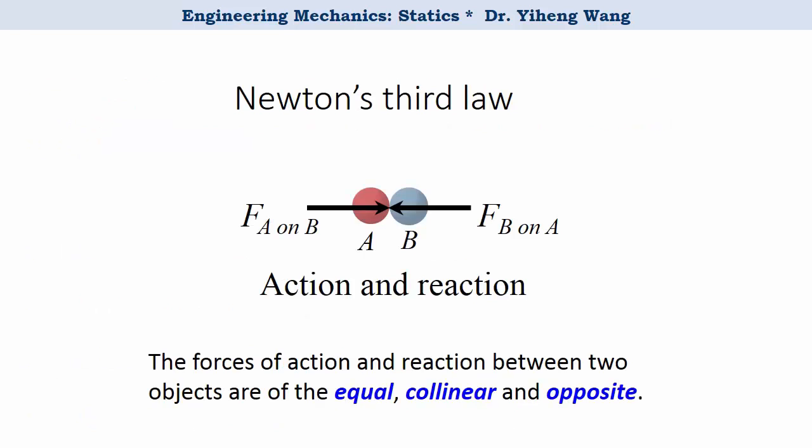Newton's third law is the law of action and reaction. Let's say object A exerts a force on object B. Inevitably and simultaneously, object B will also exert a force on object A. These two forces will be equal, collinear, and opposite, which means that they will have the same magnitude, same line of action, and opposite directions. These two forces are known as action and reaction, and that is why if you punch the wall very hard, you might get hurt instead, because the wall is exerting the same force back to you.